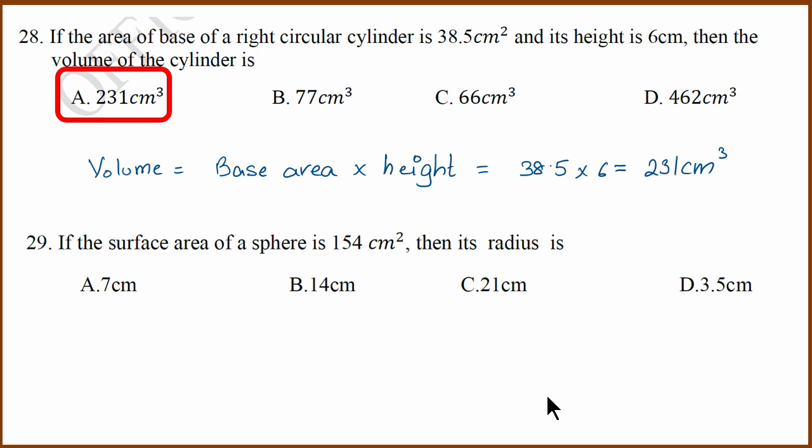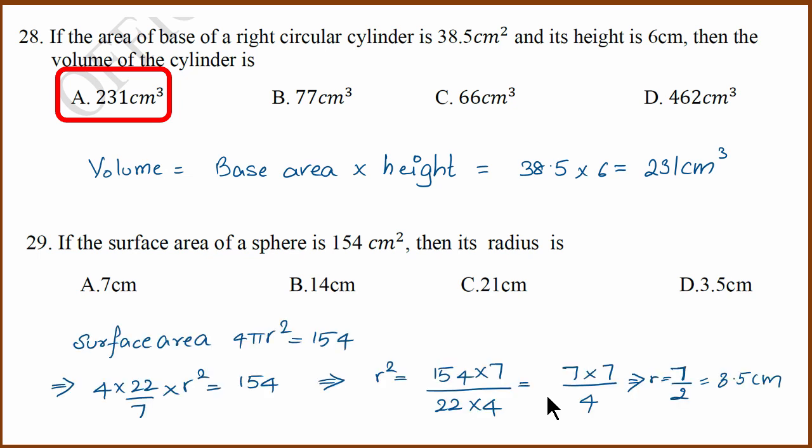29th question. They have given you surface area but you have to find radius. Surface area, we know the formula 4 pi r square. If you equate 4 pi r square to 154 and simplify, you get 3.5 cm as the value of r. D is the answer.